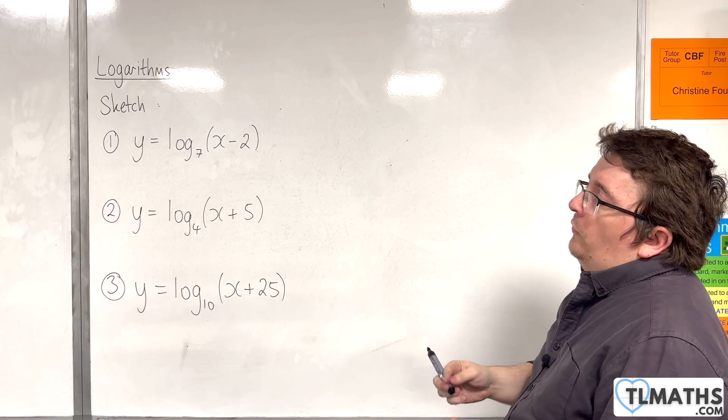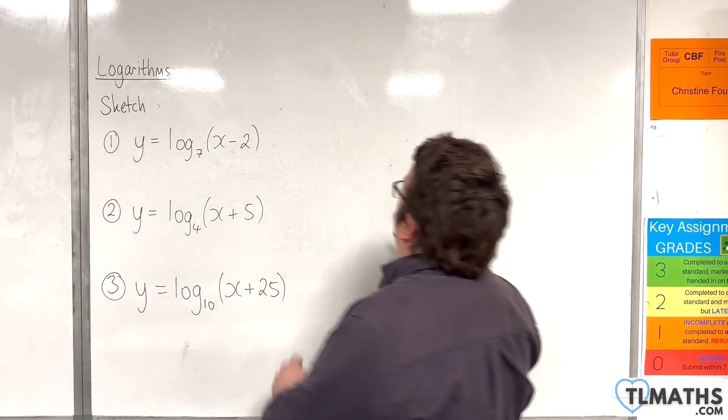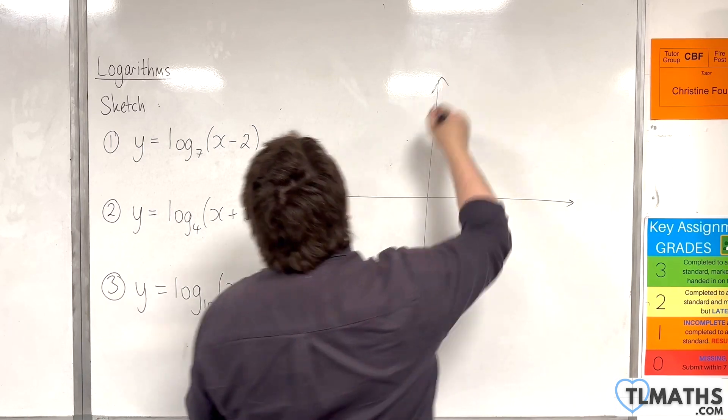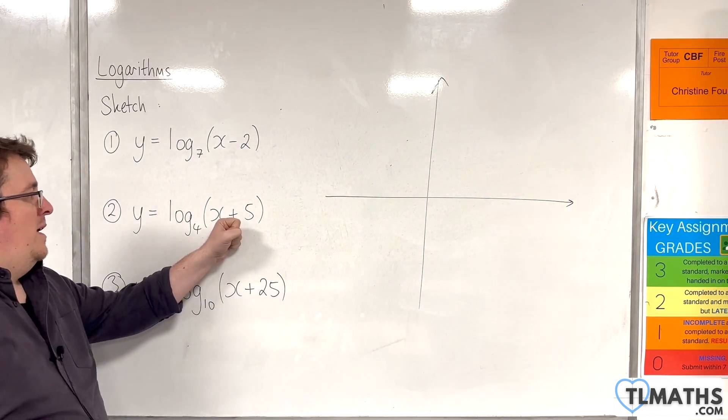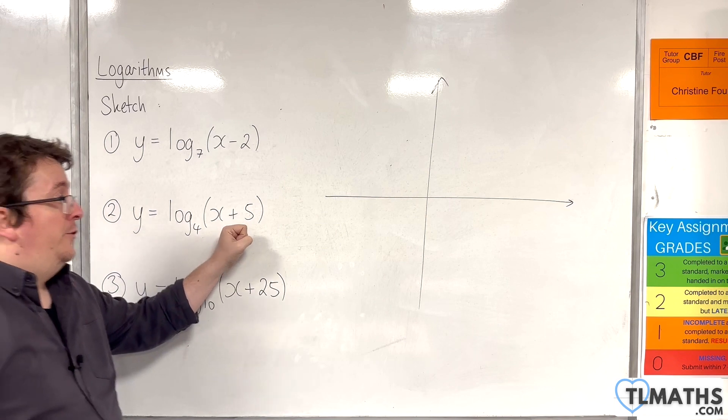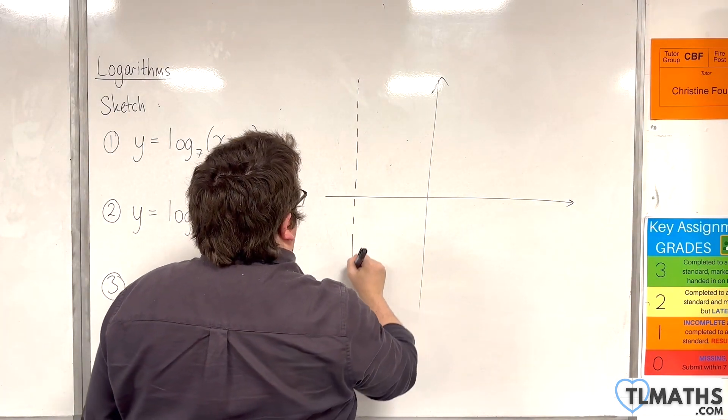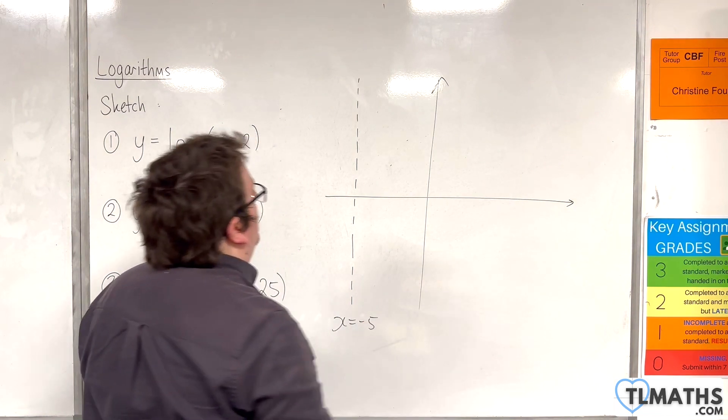So number two, y equals log base 4 of x plus 5. So first of all, the bracket is 0 when x is minus 5. So that is where our vertical asymptote must be, x equals minus 5.